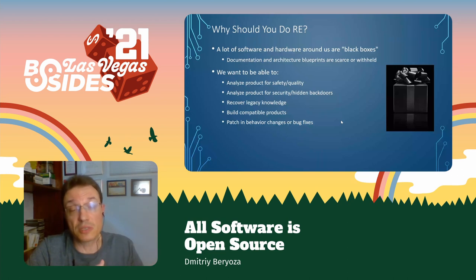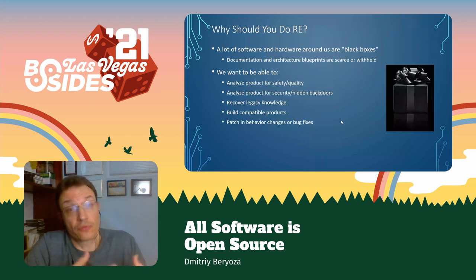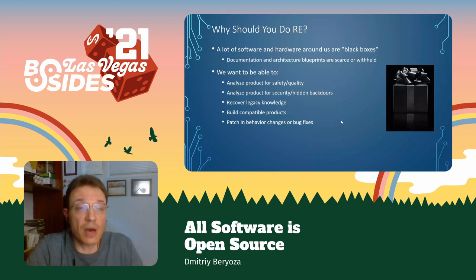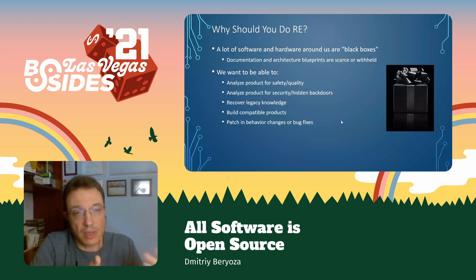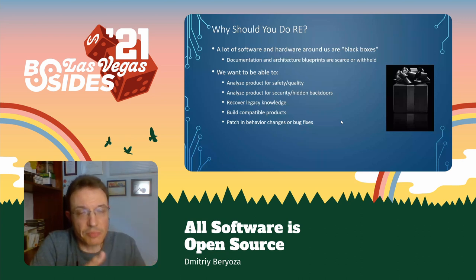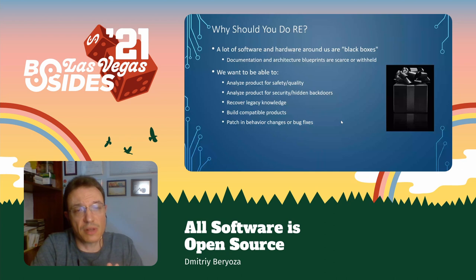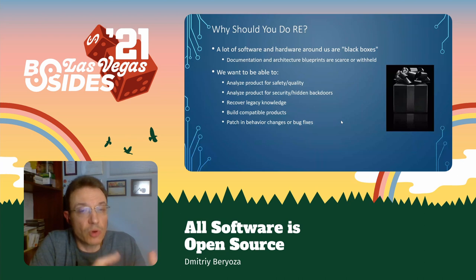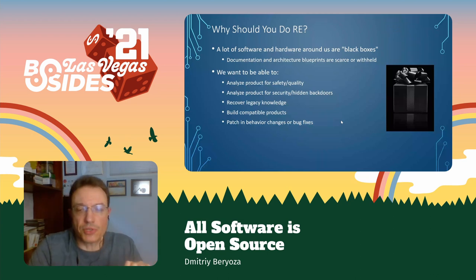Companies do build backdoors for their own technical support that are later abused by attackers. Sometimes a company goes out of business, so there's no way to discover the architecture of a product — you're forced to open it and examine it. Sometimes you want to build compatible products and the company isn't forthcoming with their designs. Yet another reason is maybe you want to modify how a product works or fix a certain annoying issue the company is just unwilling to address.